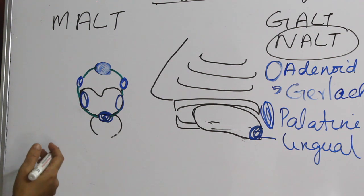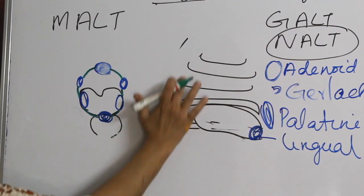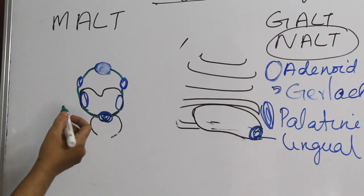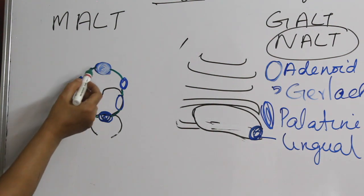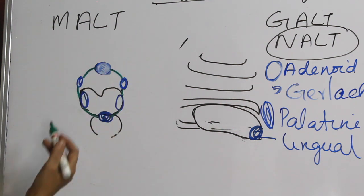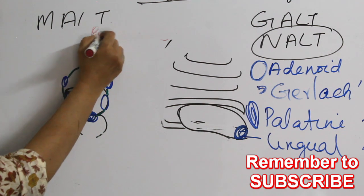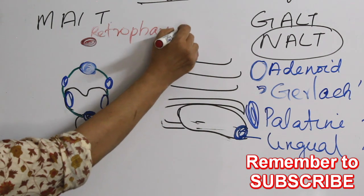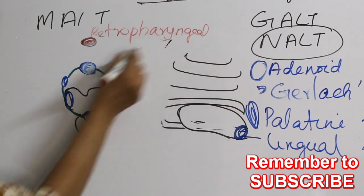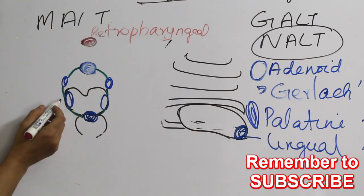So if there is an inner ring, there should be an outer ring also. What constitutes the outer ring? This outer ring is constituted by lymph nodes in the neck from which this inner ring structures drain. Retropharyngeal, adenoids drain into retropharyngeal lymph nodes. Actually the tubal tonsils and adenoid drain into retropharyngeal.